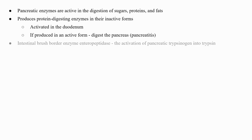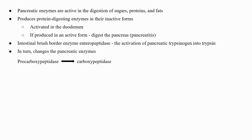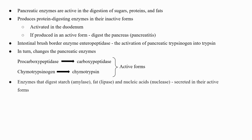The intestinal brush border enzyme enteropeptidase stimulates the activation of pancreatic trypsinogen into trypsin, which in turn converts the pancreatic enzymes procarboxypeptidase and chymotrypsinogen into their active forms: carboxypeptidase and chymotrypsin, respectively. The enzymes that digest starch (amylase), fat (lipase), and nucleic acids (nuclease) are secreted in their active forms, since they do not attack the pancreas as the protein-digesting enzymes do.